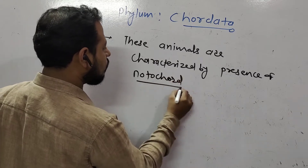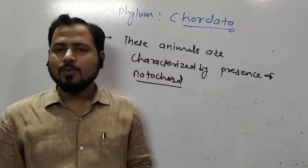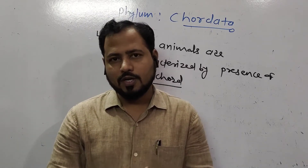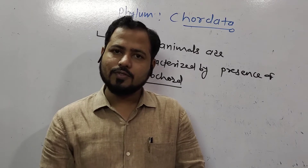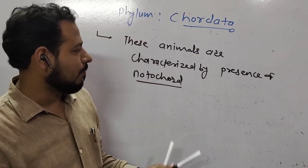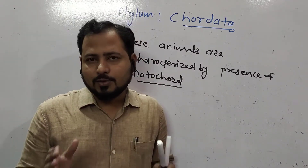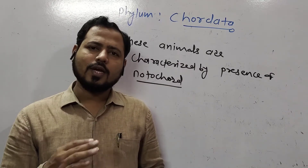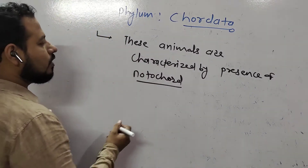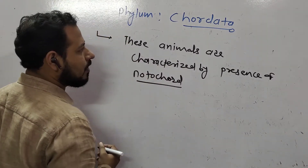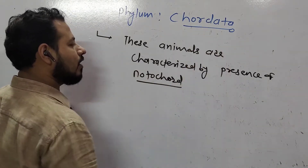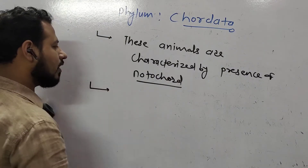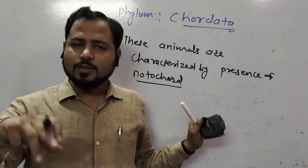Notochord may be bony or cartilaginous — a hard, stiff rod-like structure which is supporting in function. It separates nerves from the rest of the body, isolating the nervous system. It also acts as an attachment for muscles. The notochord is the characteristic feature of Chordata and is dorsal in position.